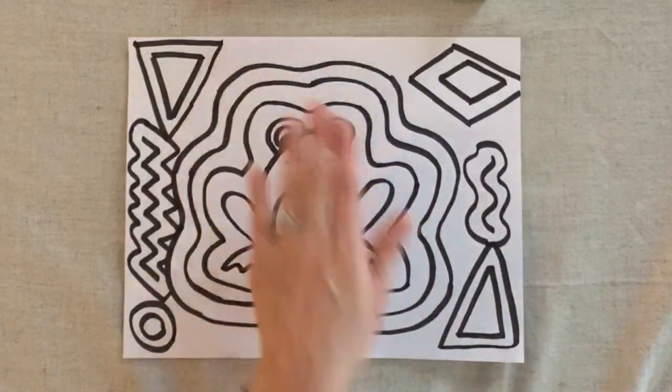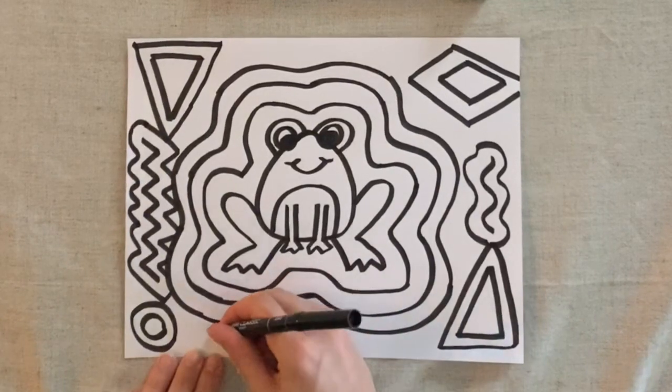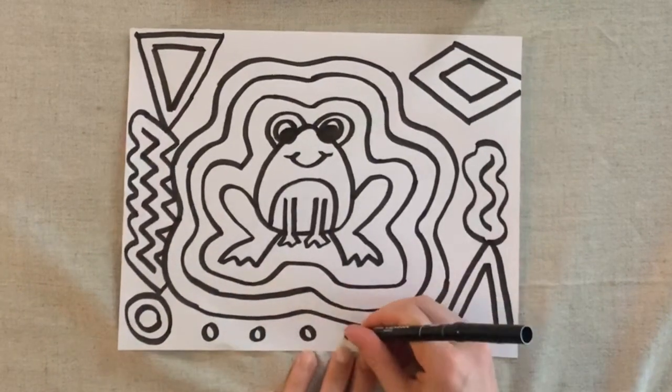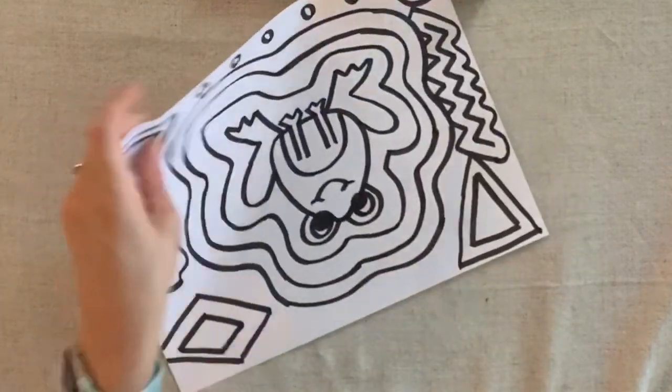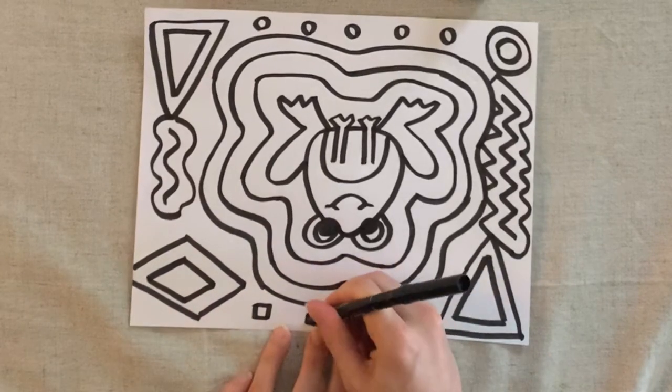Now, if you have some extra room on the top or the sides, you can also add some smaller designs. So I think I'm just going to add a few smaller circles to fill in the rest of my mola. You could also do a different shape, like a square.